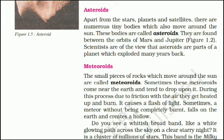Asteroids: Apart from the stars, planets and satellites, there are numerous tiny bodies which also move around the Sun. These bodies are called asteroids. They are found between the orbits of Mars and Jupiter. Scientists are of the view that asteroids are parts of a planet which exploded many years back.